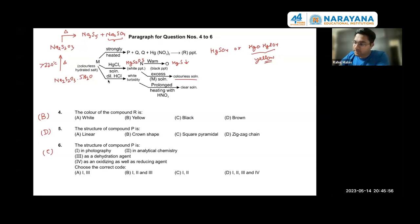When we react thiosulfate with HgCl2, it will again form Hg(S2O3) which upon warming gives us black precipitate HgS. In excess of M solution, when we are having excess of M solution, the complex will form with mercury, that will be a colorless solution. On dilute HCl, thiosulfate will give us the sulfur as a white turbidity. Upon prolonged heating with HNO3, the solution will become again clear. This is the overall reaction. The color of compound R is actually yellow. So the structure of compound P is zigzag chain because it is S5 2-.